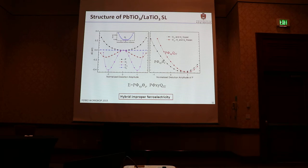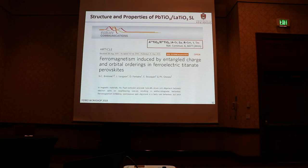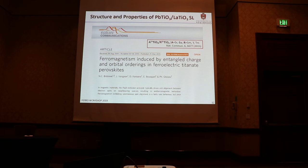So in fact, there are two trilinear couplings. These superlattices are hyperimproper ferroelectrics, and they have strong ferromagnetism. This material has also been discovered experimentally, and in other titanate superlattices, A is a strontium or barium, and R is other rare-earth elements.